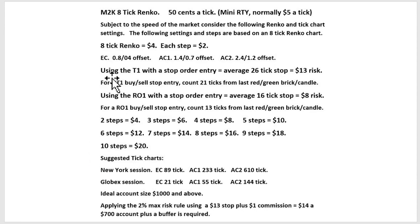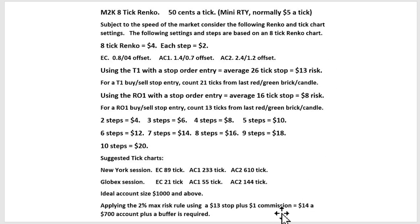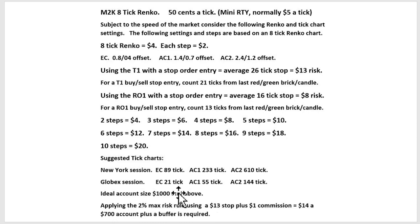Using the stops I'll be showing you, our average stop is going to be $13. If you add in a dollar commission on the micros — which varies from broker to broker — it'll be around $14. Applying the two percent rule, you need roughly a $700 account plus a buffer. That's why I recommend the buffer when you first kick off, to allow for a couple of losses.